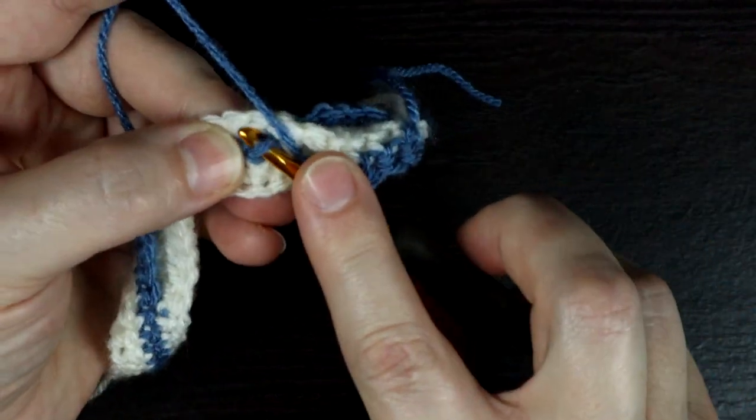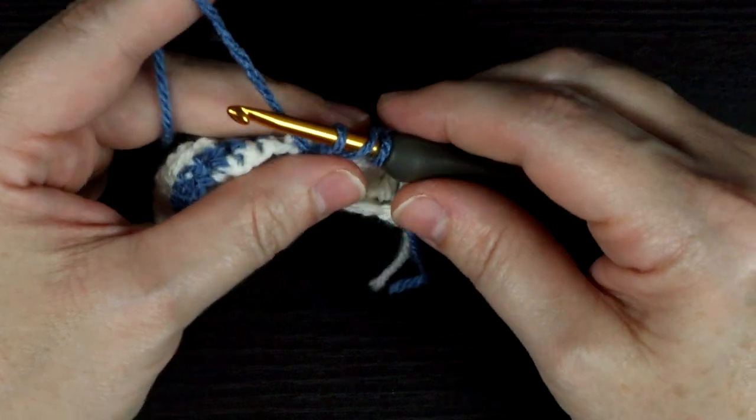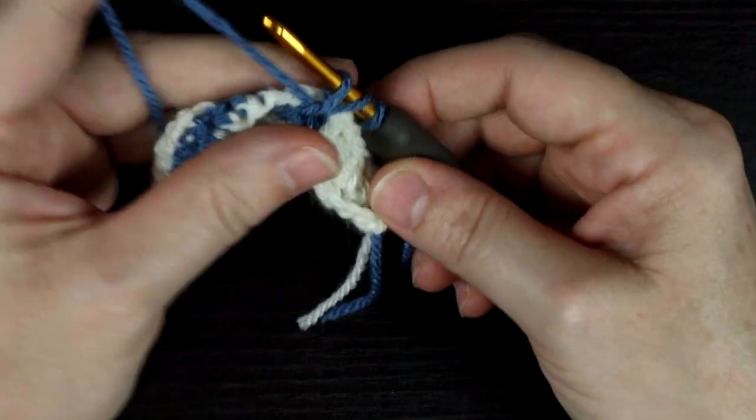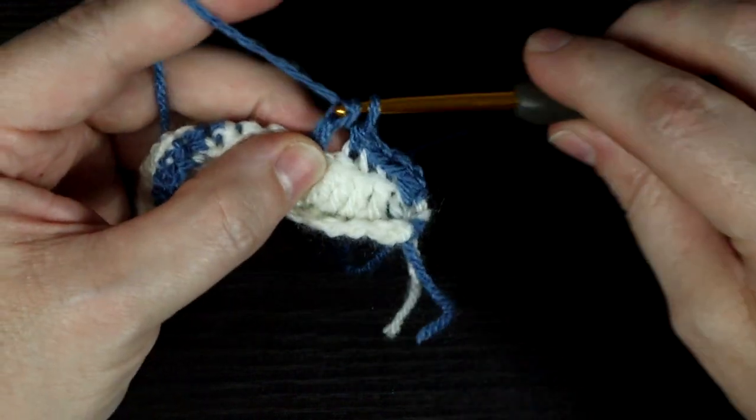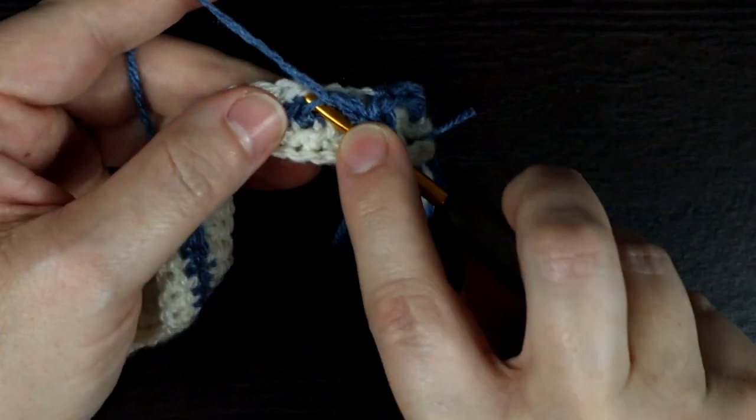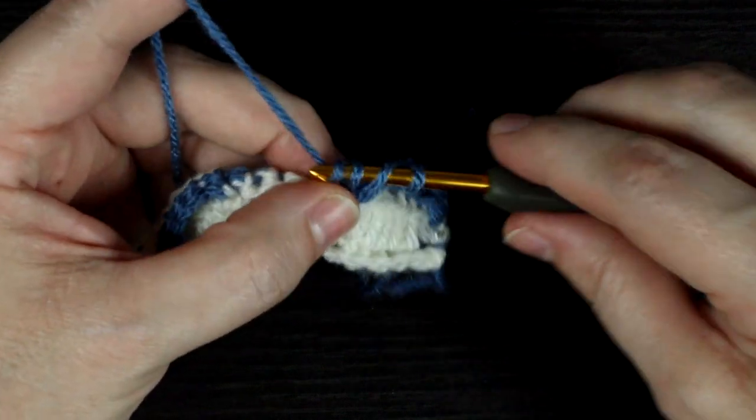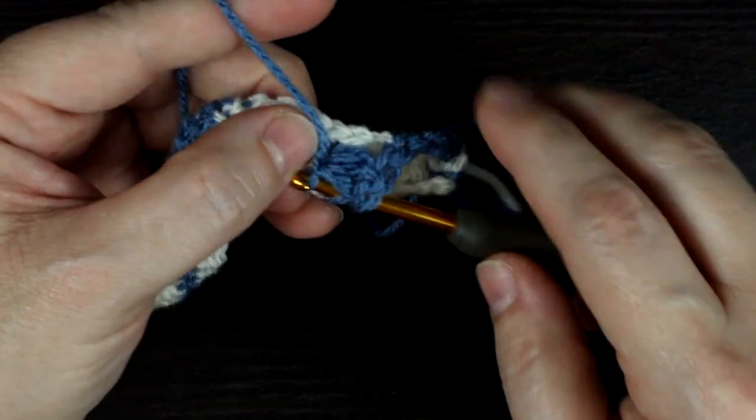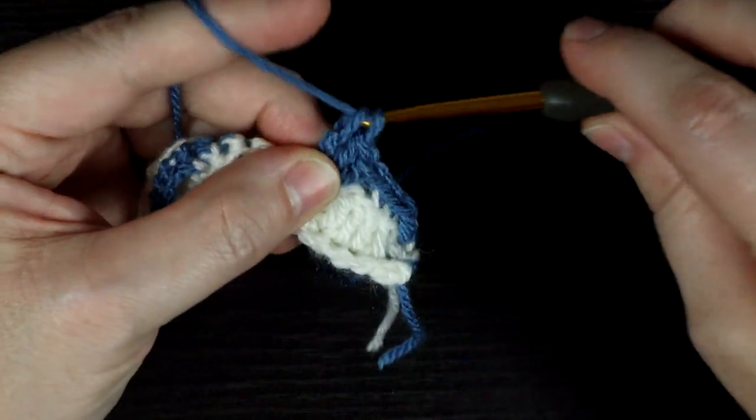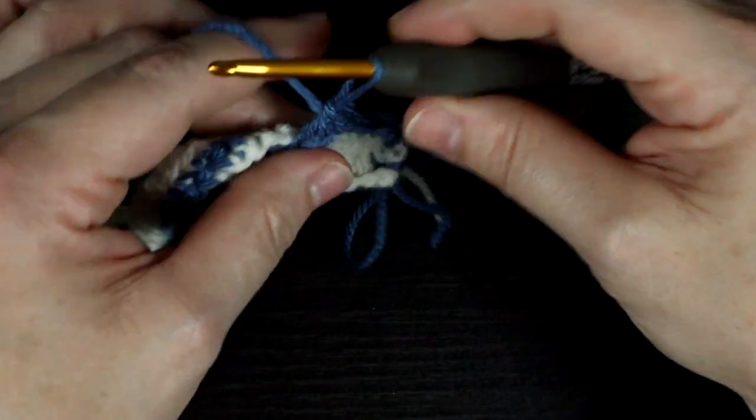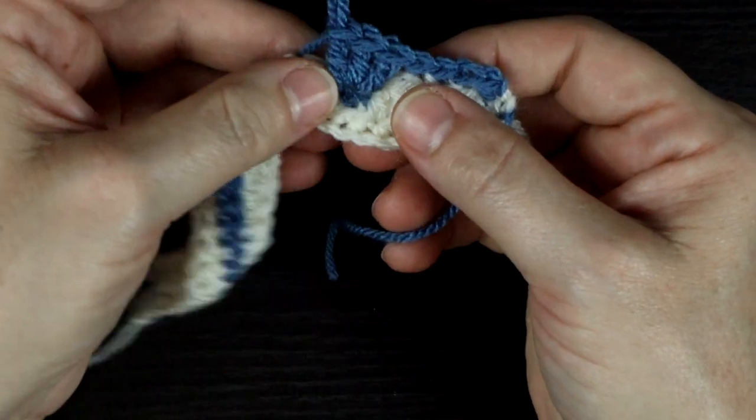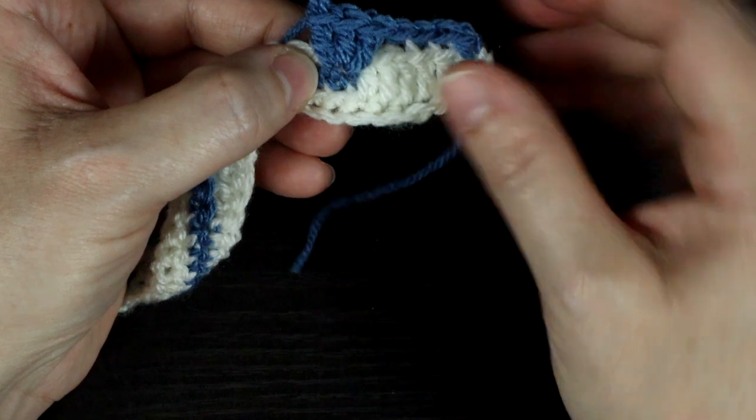When I work an angled stitch I pull the first loop up to equal the height of the row I'm working from to give the stitch some slack so it doesn't pull the loop I'm working into out of shape. Now I work my next stitch into the same loop and then the third stitch. I always stop here and adjust my stitches by giving them a gentle tug into place before moving forward.